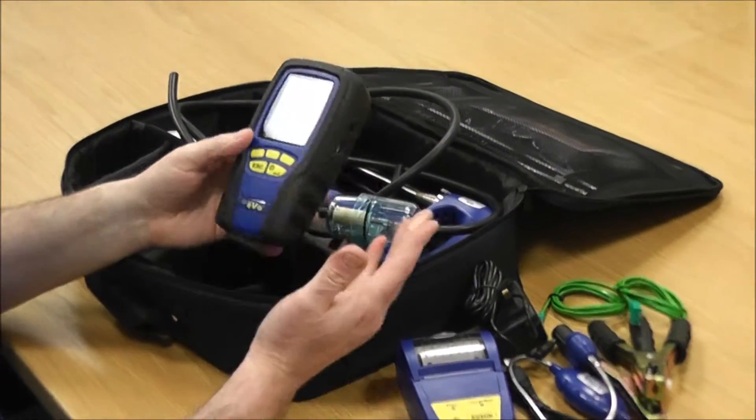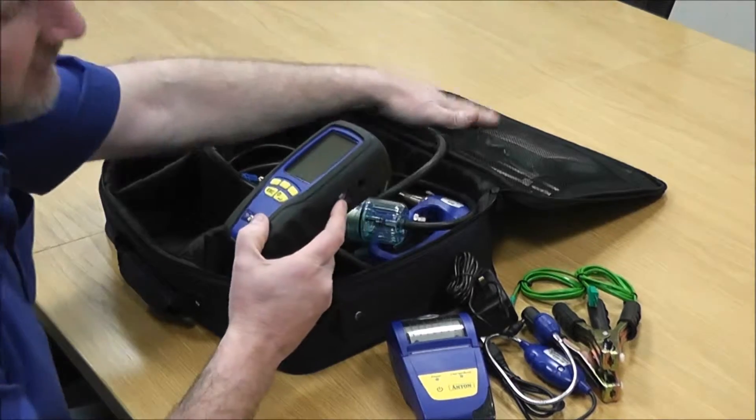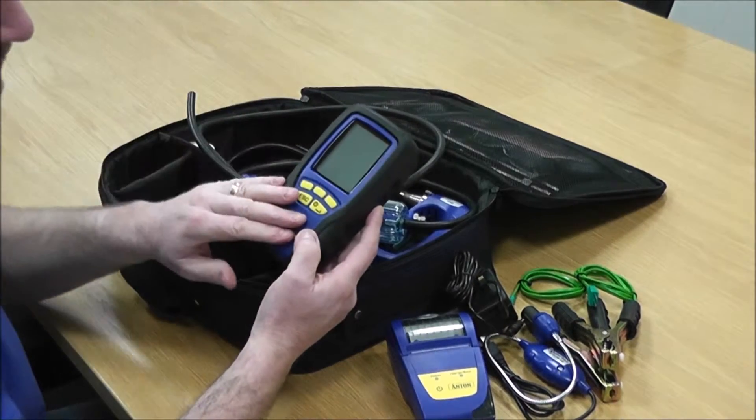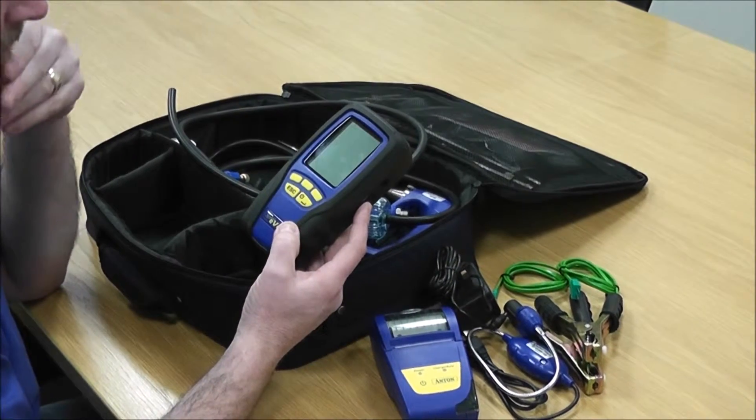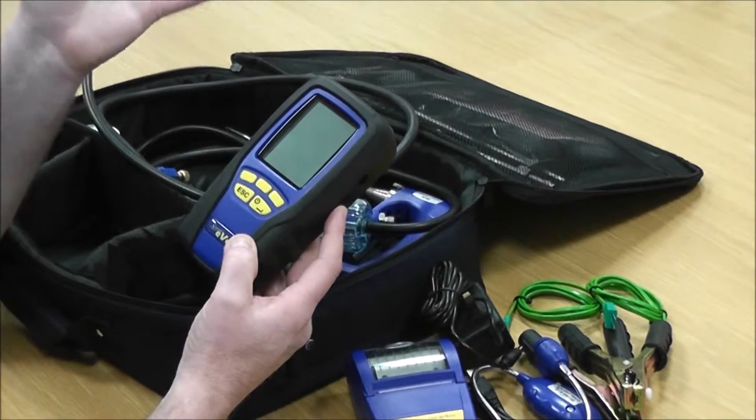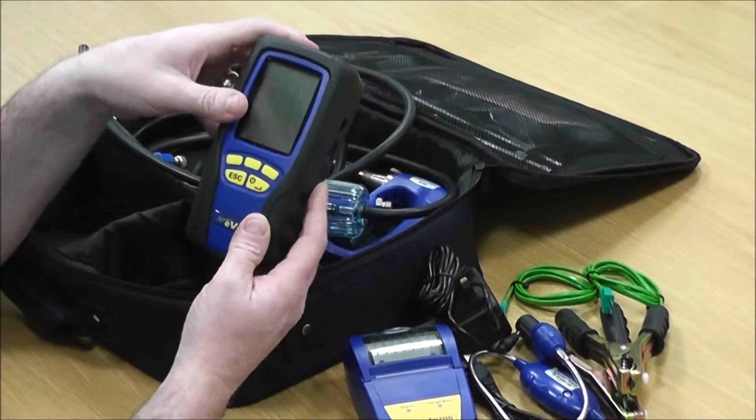It also has PC communication via USB with free software on the disk. And because it's Bluetooth enabled, you can also use it for doing wireless Bluetooth communication using our new Sprint mobile software.